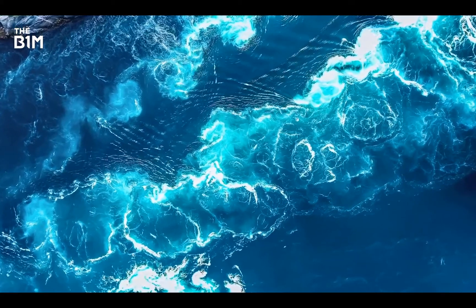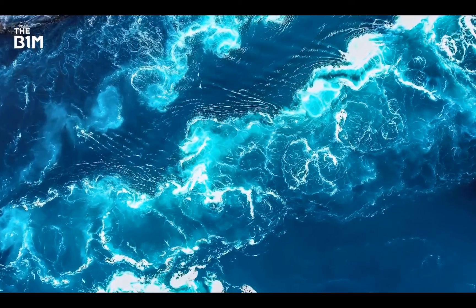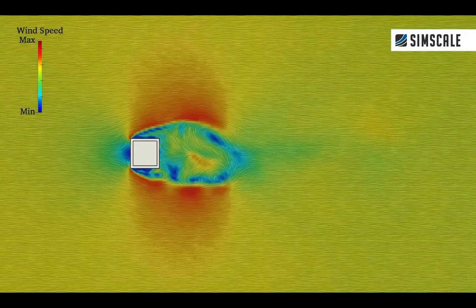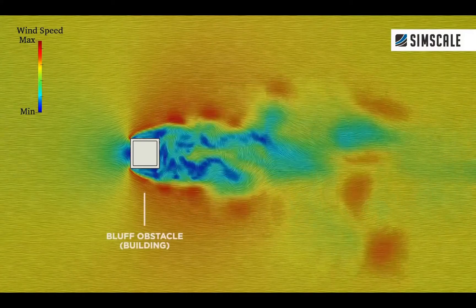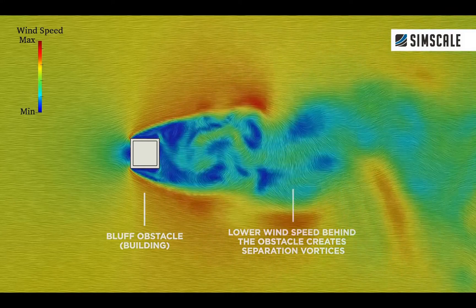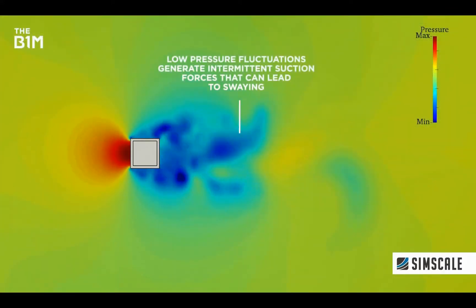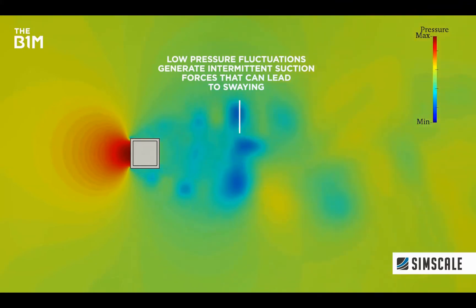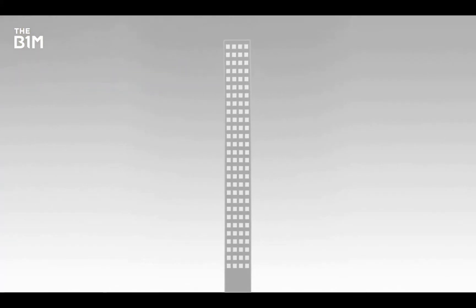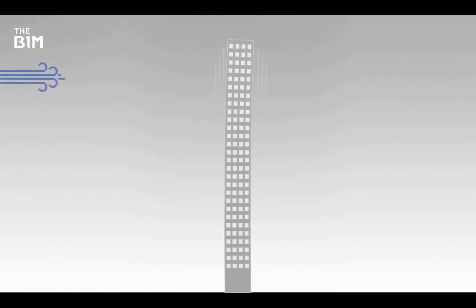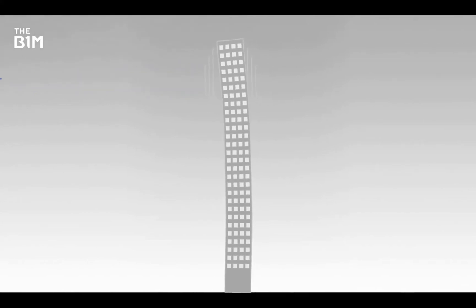Vortex shedding acts differently on obstacles depending on how streamlined they are. The sheer block walls of these buildings created a bluff obstacle that wind had to flow around. As strong winds moved around these structures, areas of low pressure emerged on the opposite side, creating suction forces that pulled at the buildings and caused them to sway back and forth. High winds can create vortices that match the frequency of the building, causing noticeable swaying and shaking motions for those inside.